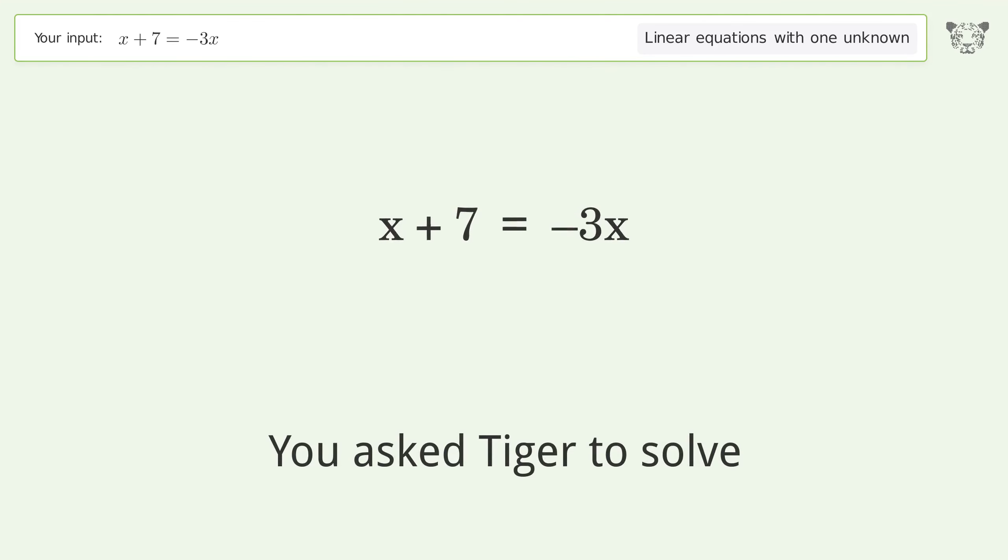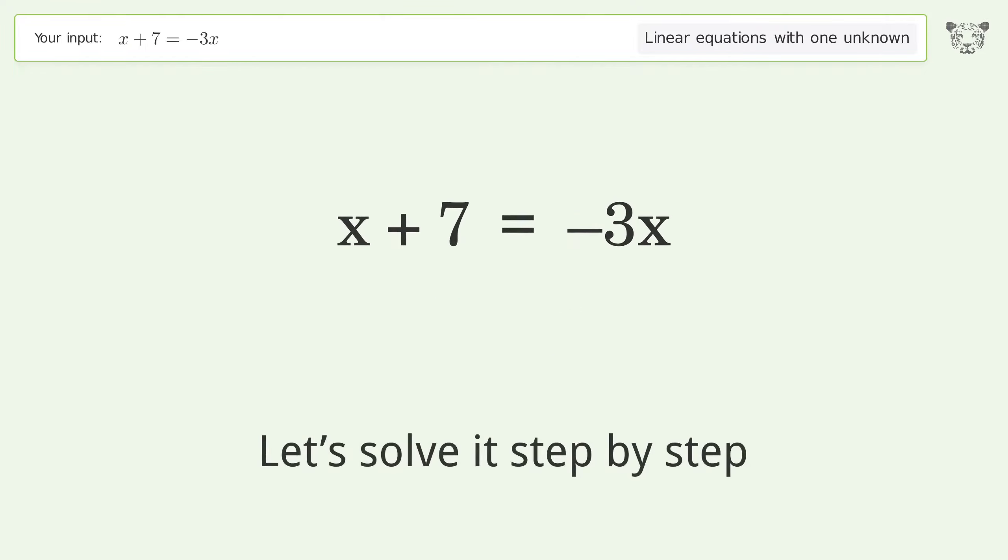You asked Tiger to solve. This deals with linear equations with one unknown. The final result is x equals negative 7 over 4. Let's solve it step by step.